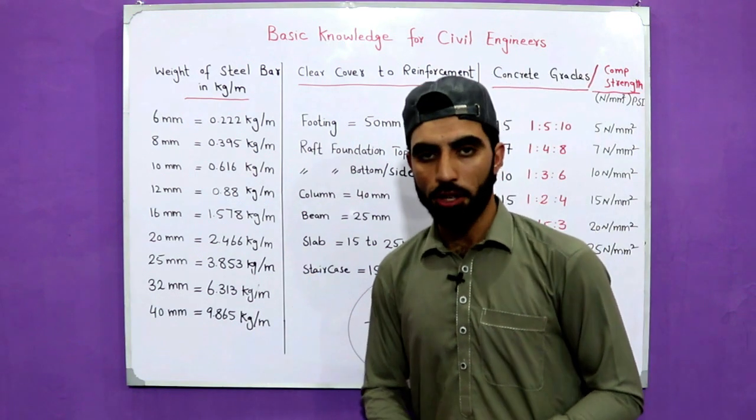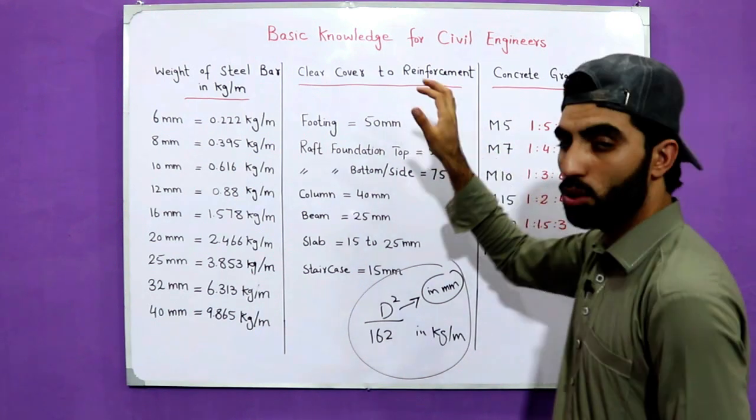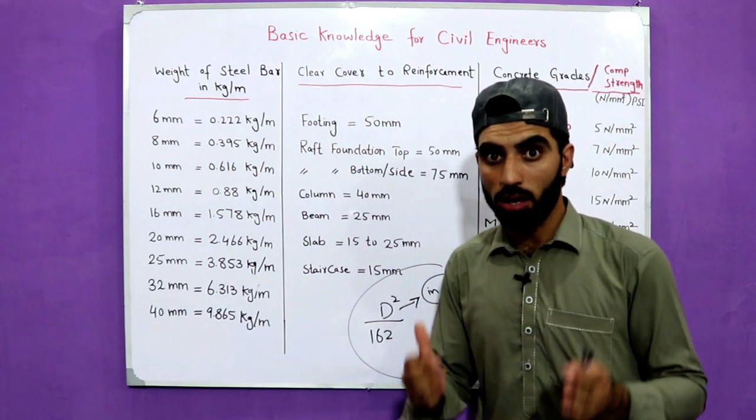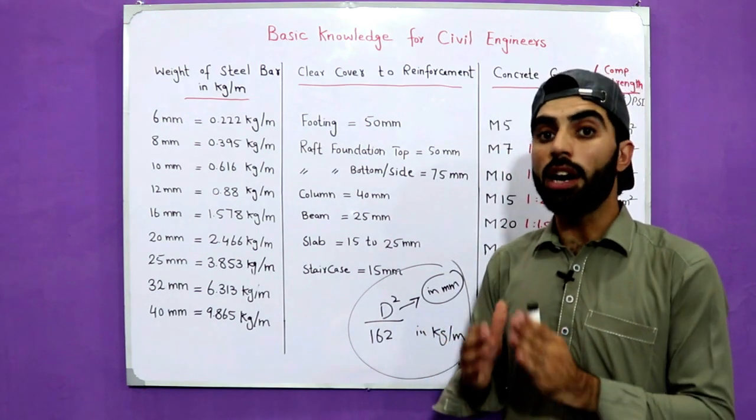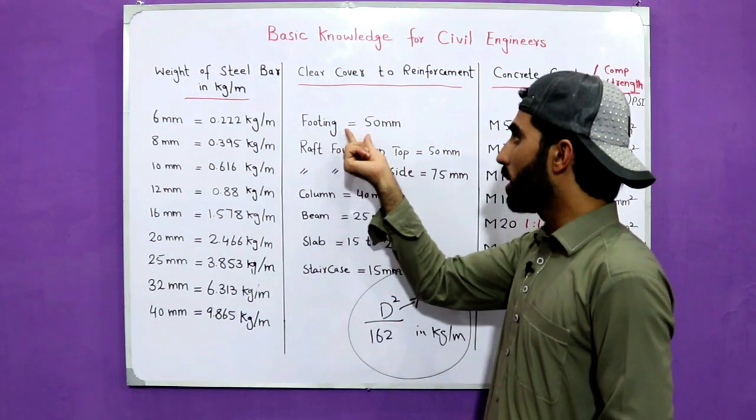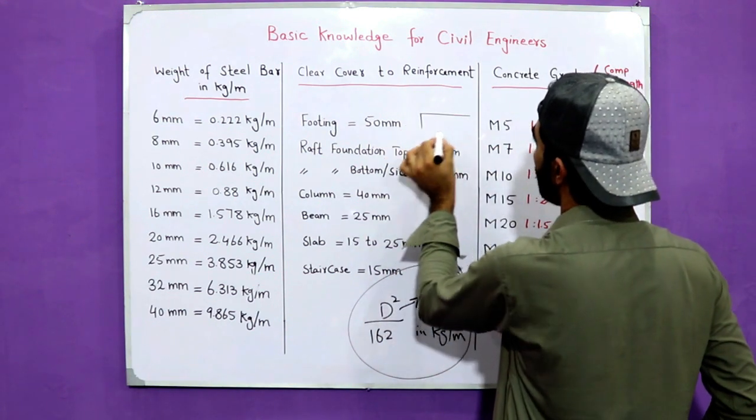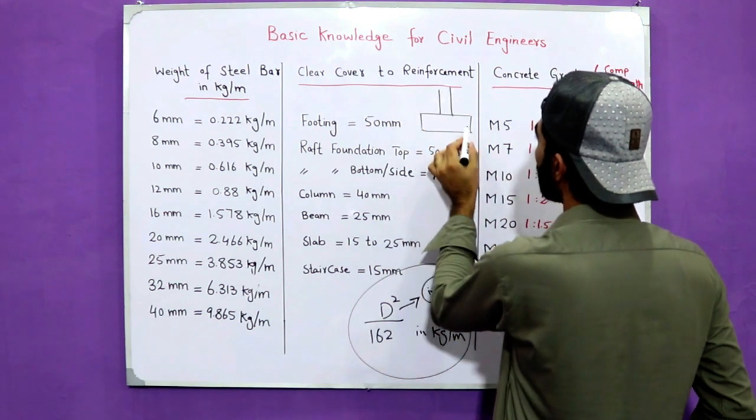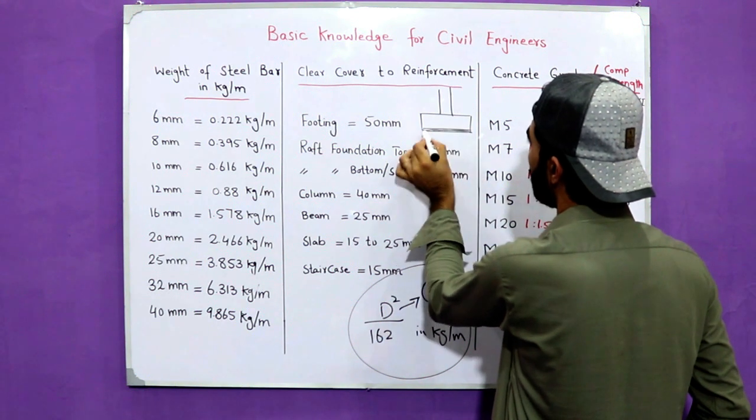In the second column we have clear cover to main reinforcement for different structures like footing, column, beam, slab, staircase, etc. For footing the clear cover is 50mm. This is the footing, this is column - the footing clear cover should be 50mm, then we put steel bars.